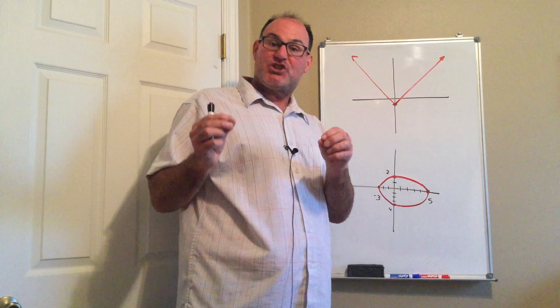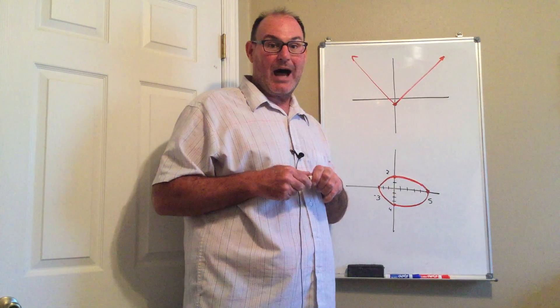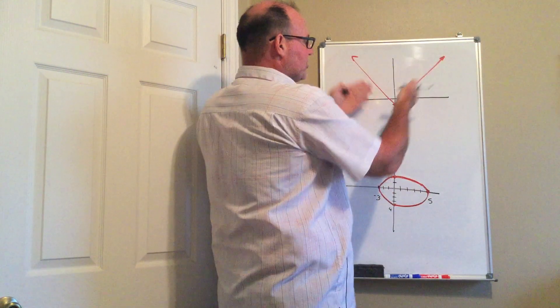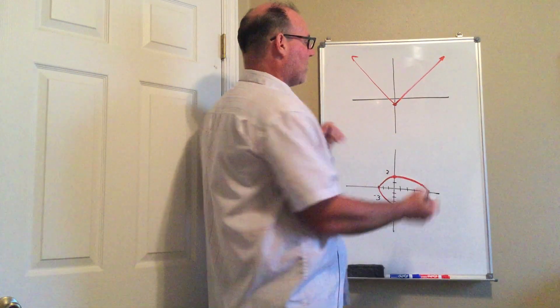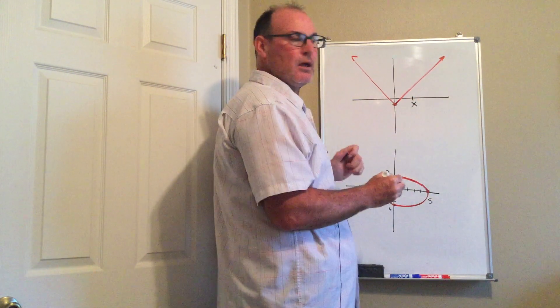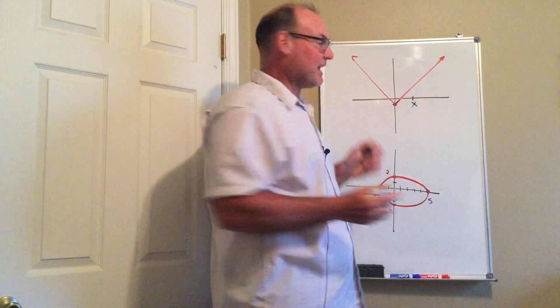Remember the definition of a function is for each x value it corresponds to exactly one y. So I'm looking at this function right here, it's just a v, it's called an absolute value function, you don't need to know that right now. So here is an x value, and here's the question: how many y values go with that x value?